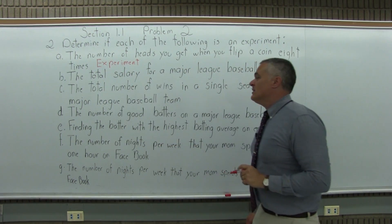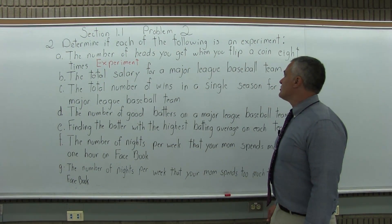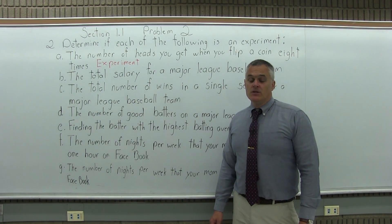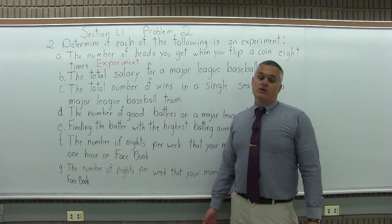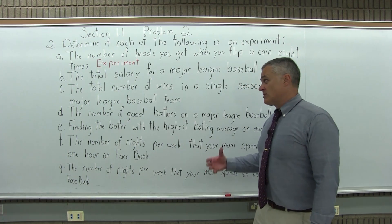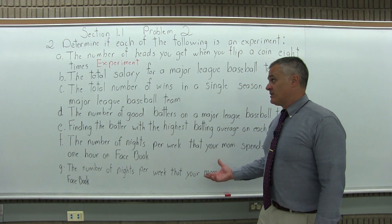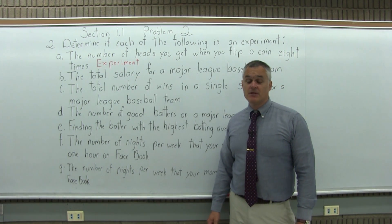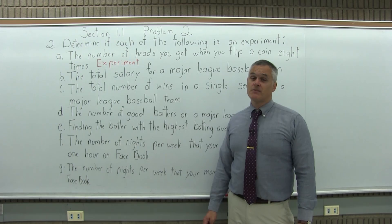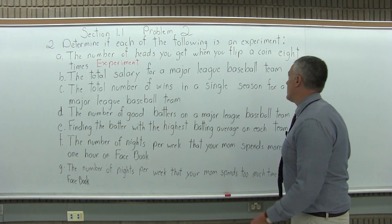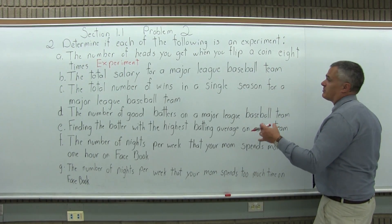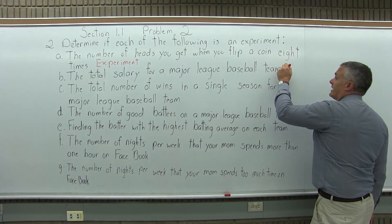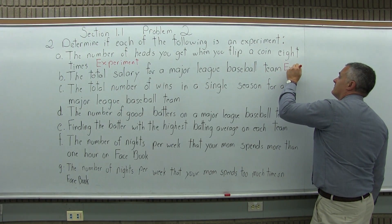Part B: the total salary for a major league baseball team. Baseball players do get paid a lot. Let's say the total salary for the whole team is $230 million maybe. That's also not an opinion — it's not something you're going to argue about or interpret different ways. So part B is also an experiment. No opinion involved.